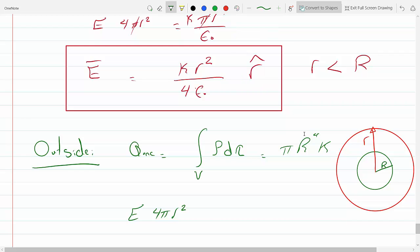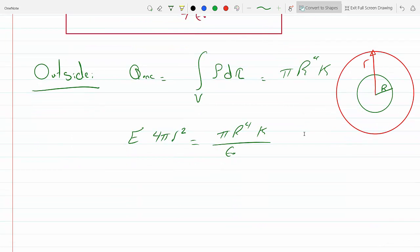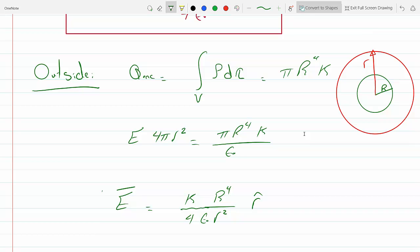And so I will get equals Q enclosed, π R⁴ times K over epsilon, and so my E would be K R⁴ over r² epsilon, and there's a 4 here, and this is definitely in the radial direction. So this is outside the sphere.